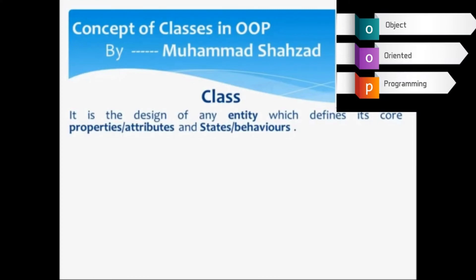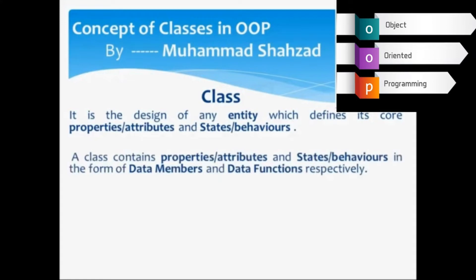We include the properties or attributes of an entity, and we include the states or behaviors of the entity within the class. A class contains properties or attributes and states or behaviors in the form of data members and data functions, respectively. The properties or attributes of an entity are represented as data members, and the states or behaviors are represented as data functions in the class.